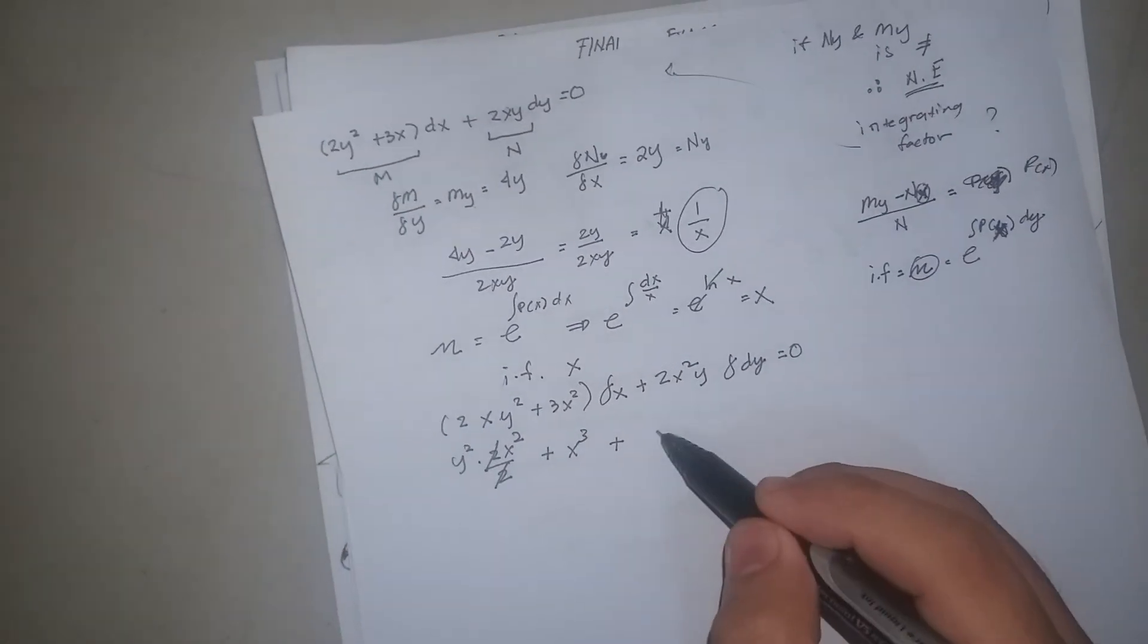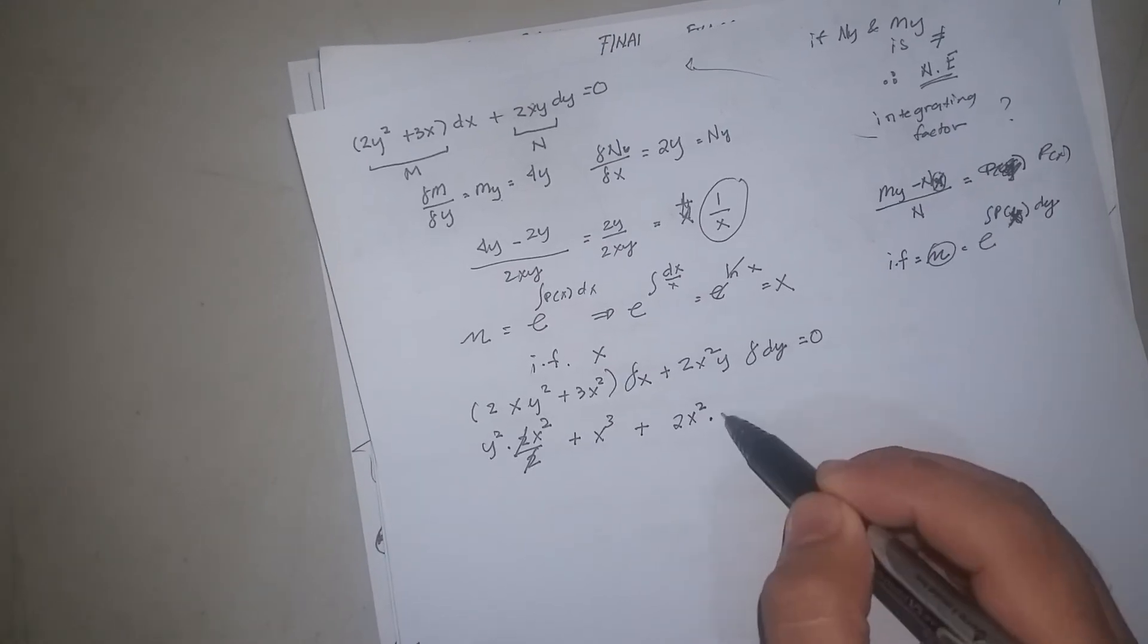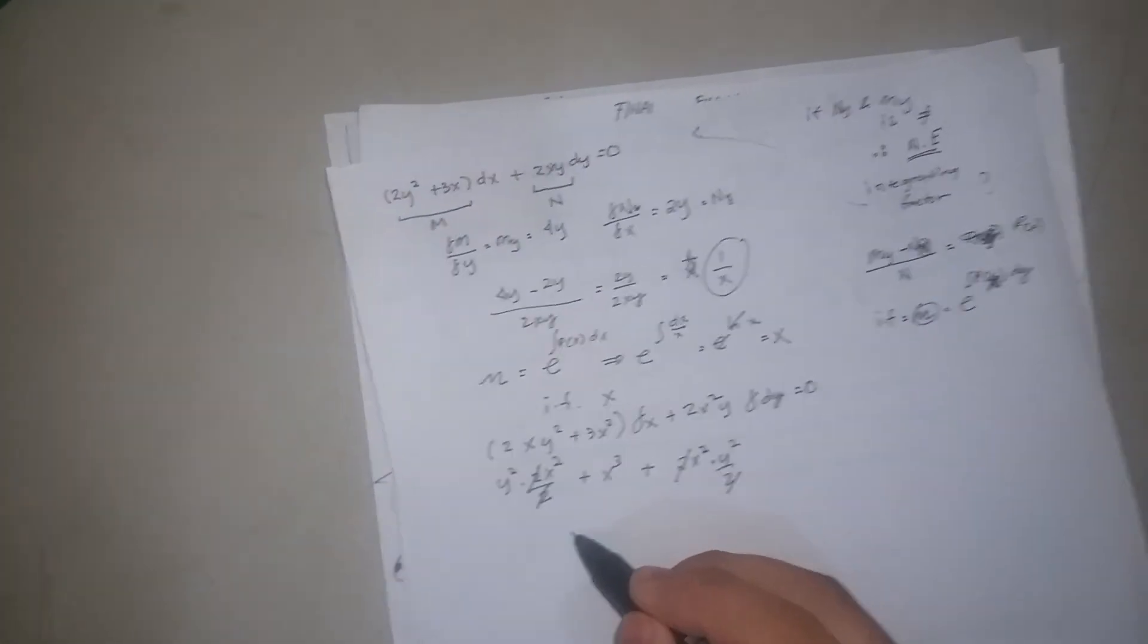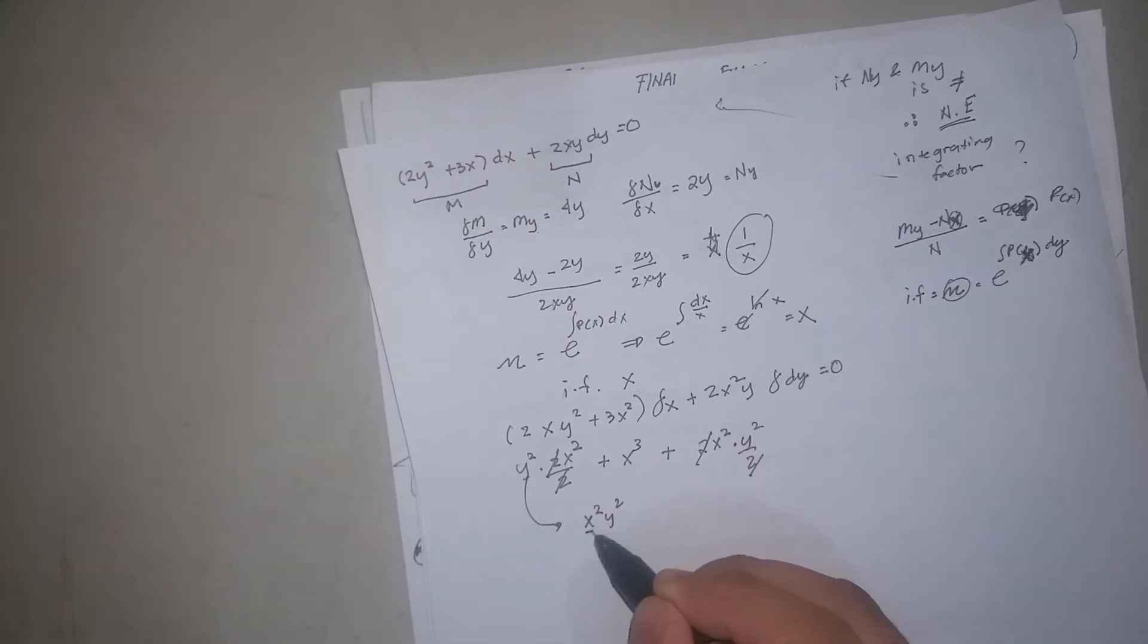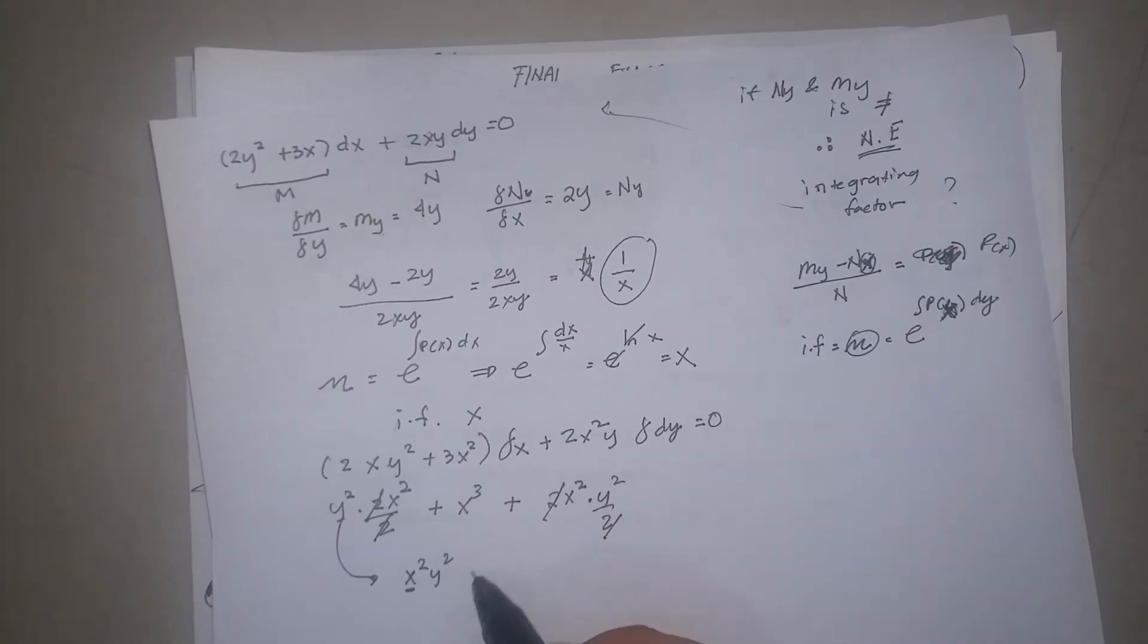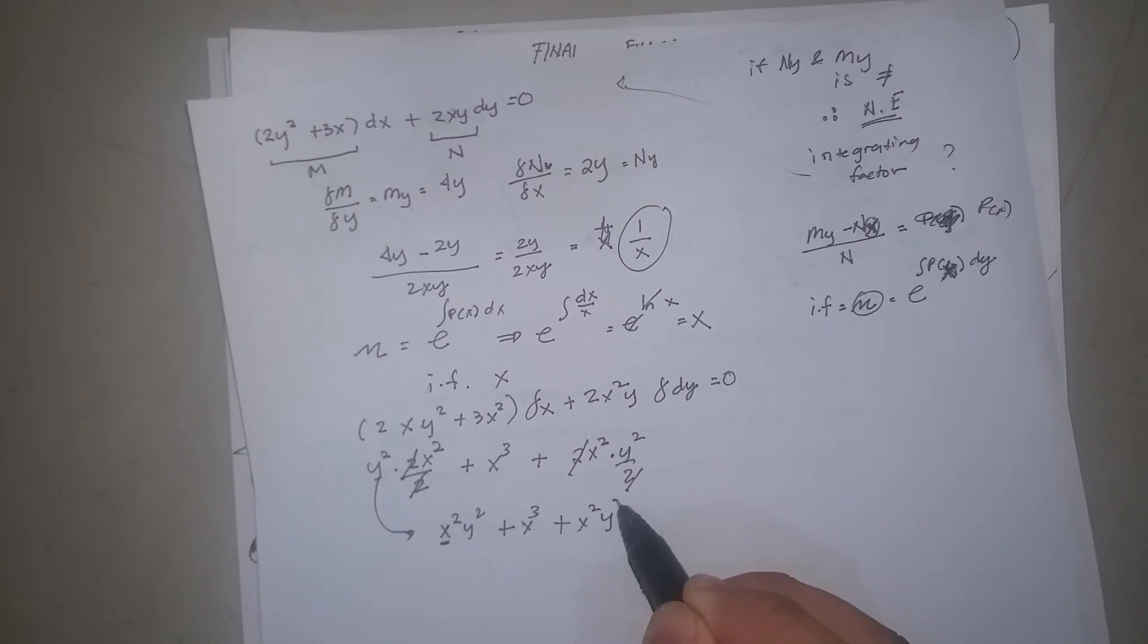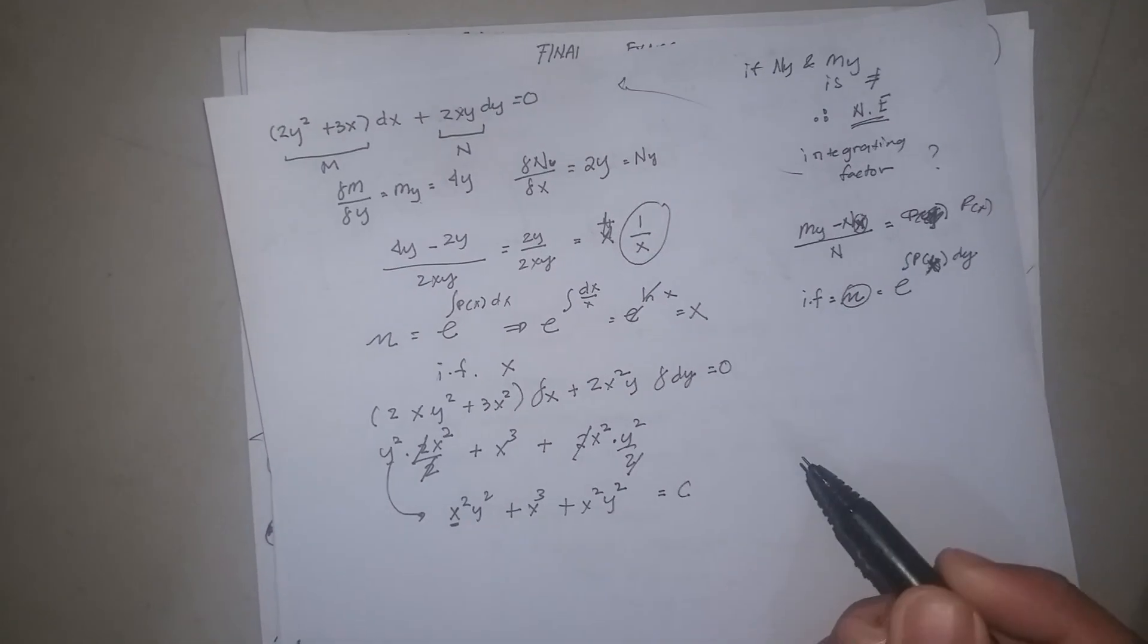Plus, with respect to y, so x will be constant: 2x squared times y squared over 2, cancel. You can form as x squared y squared. I'm gonna put the x first because it's first in alphabetical: x squared y squared plus x cubed plus x squared y squared equals C.